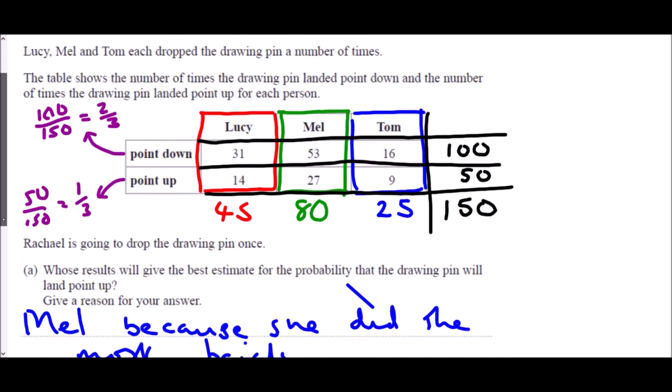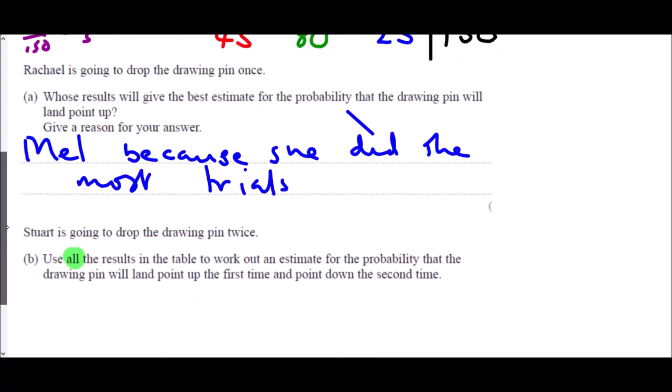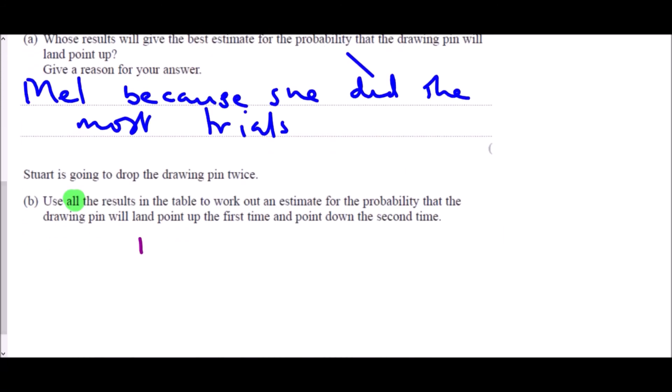And so the question was, what is the probability that it lands point up the first time and point down the second time? Well, the probability of point up is one third, the probability of point down is two thirds. Now if we are looking at a combination of probabilities - a point up and a point down - the word 'and' suggests in probability that we need to multiply. And so this is one third times two thirds. One third times two thirds, we multiply the top, so one times two, we multiply the bottom, three times three. And so our estimate would be two ninths for the probability.